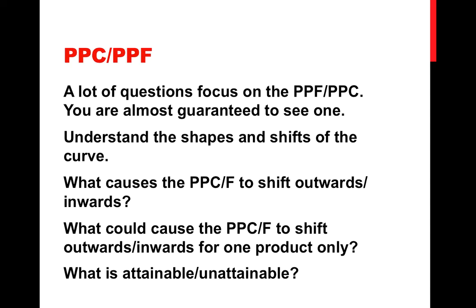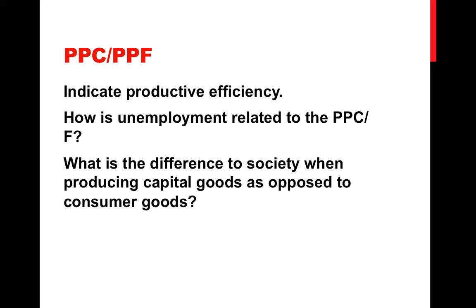Also be able to determine what is attainable given current resources and what is unattainable. Determine where productive efficiency can be seen. Think about how unemployment is related to the PPC/PPF, and society's use of resources: if we're along the curve, we're making full use of resources; within the curve, we have underutilized resources; and beyond the curve, it's impossible. Also understand the difference to society when producing capital goods as opposed to consumer goods, and what that means in the present day and the future.